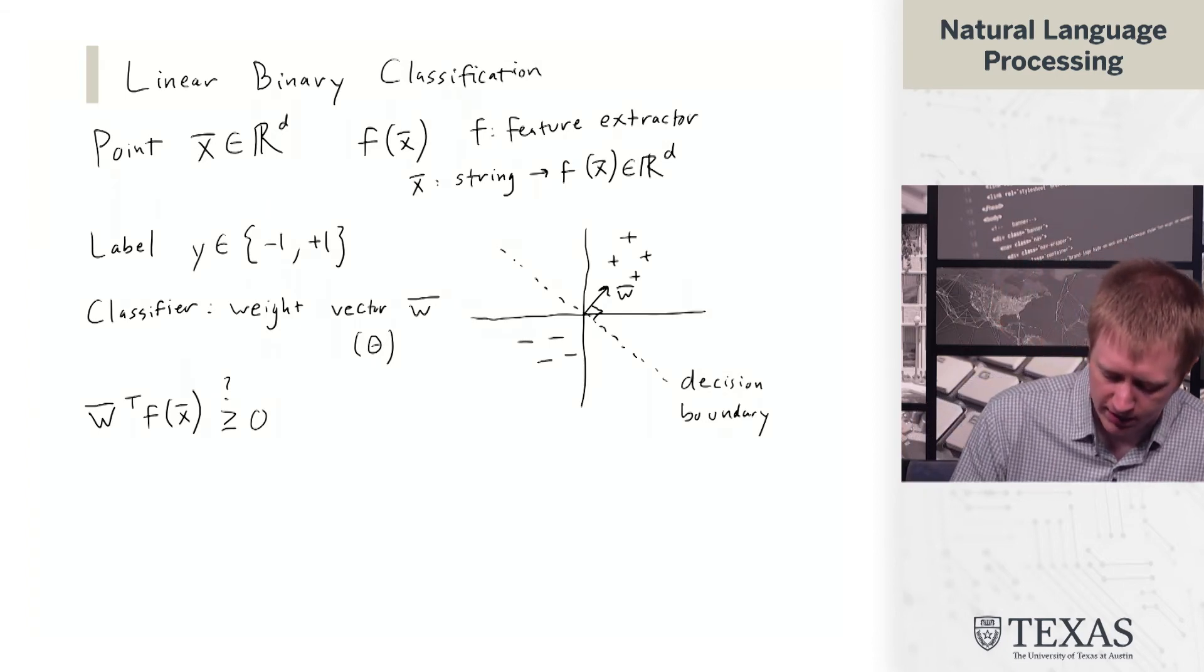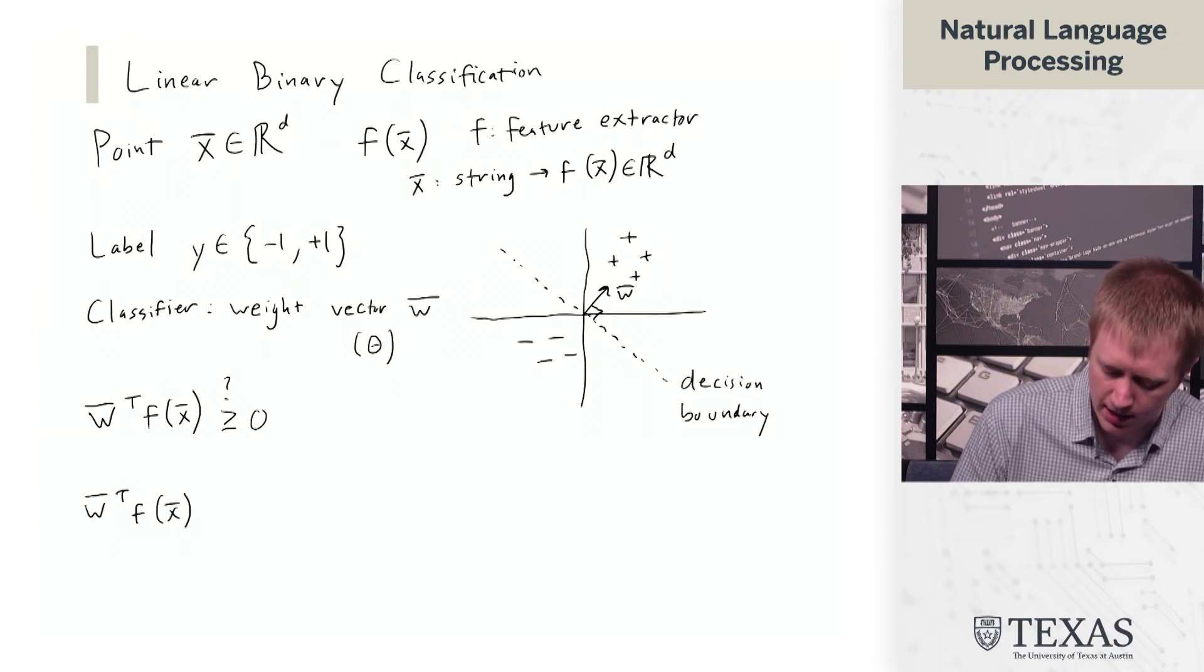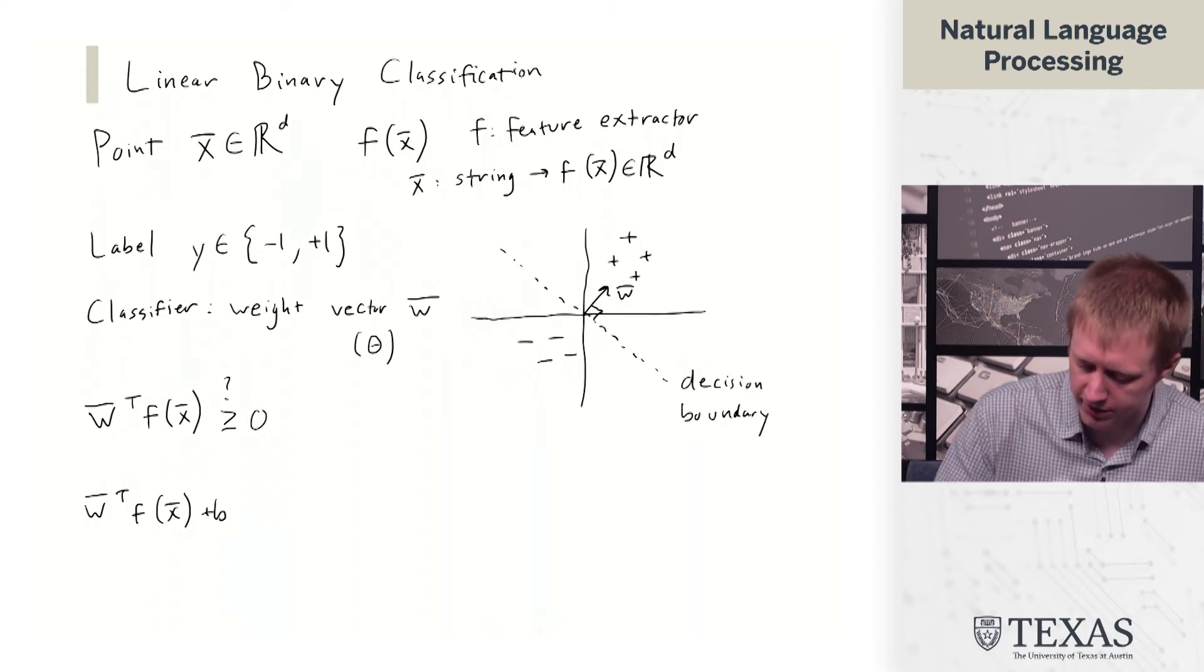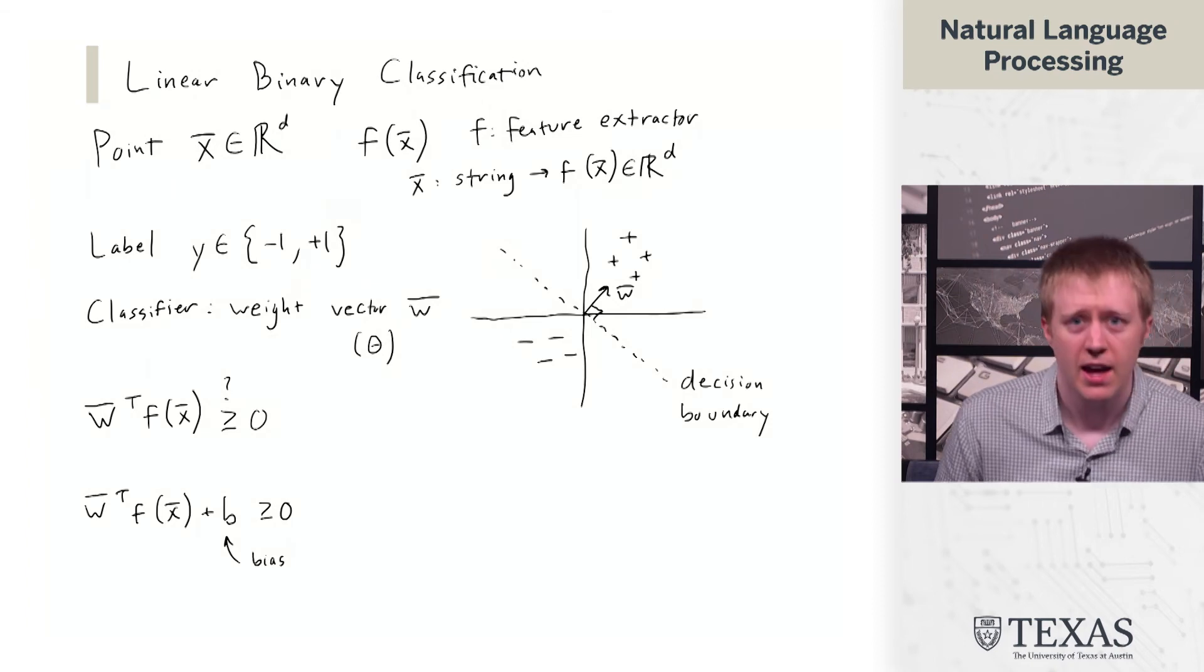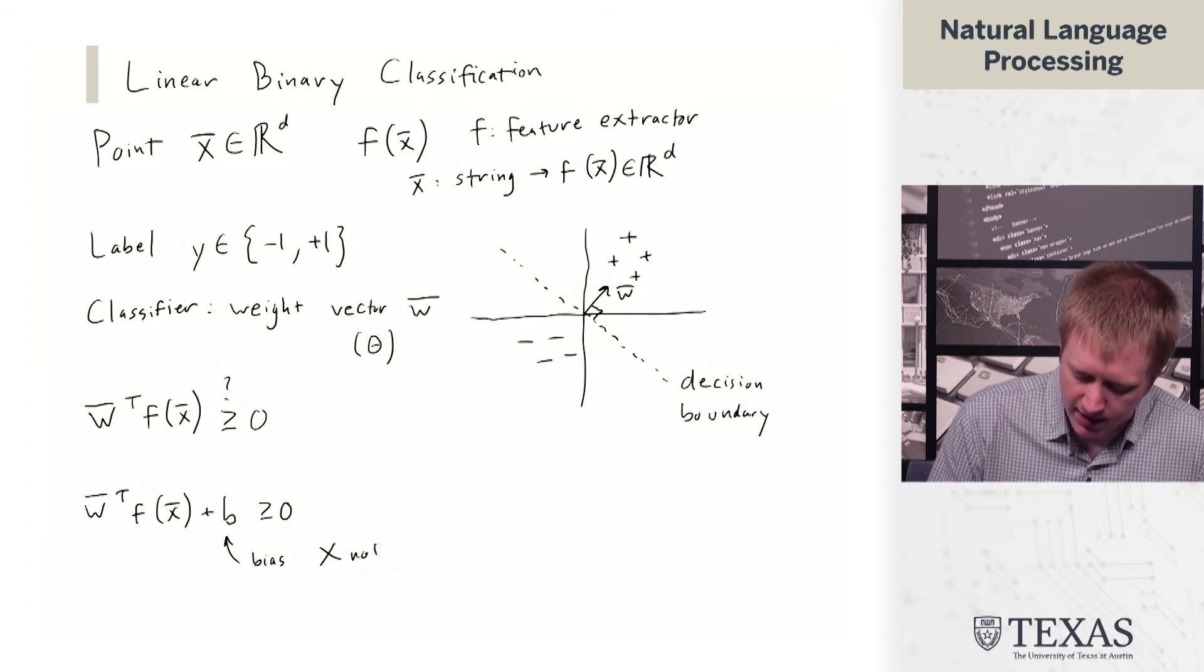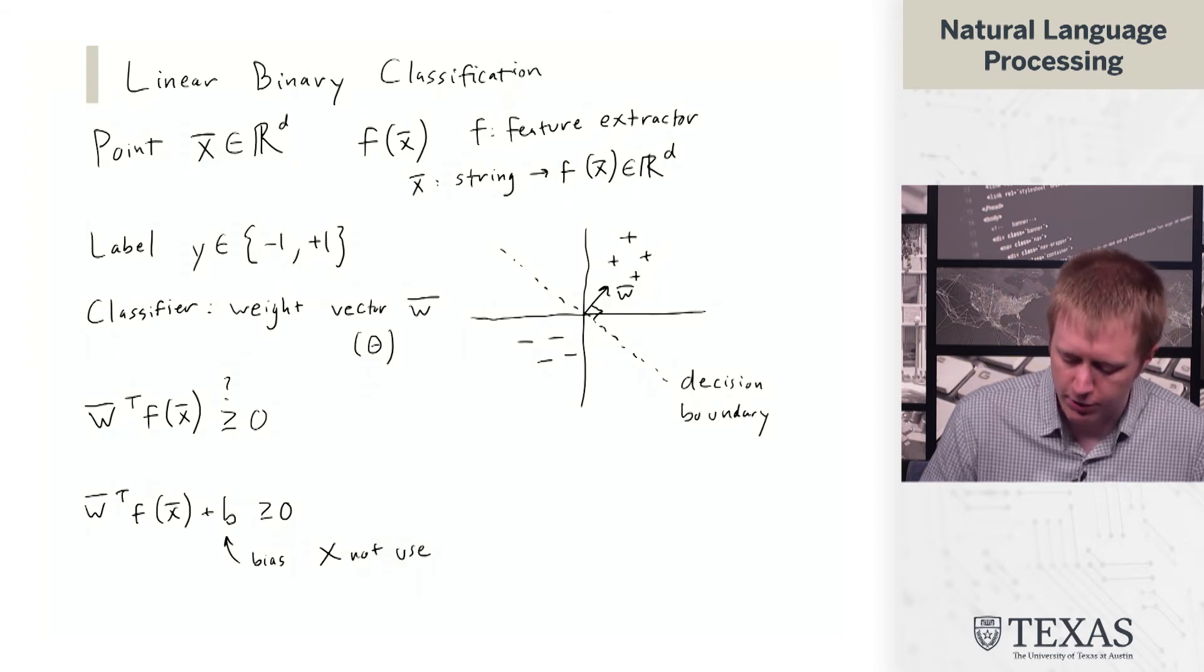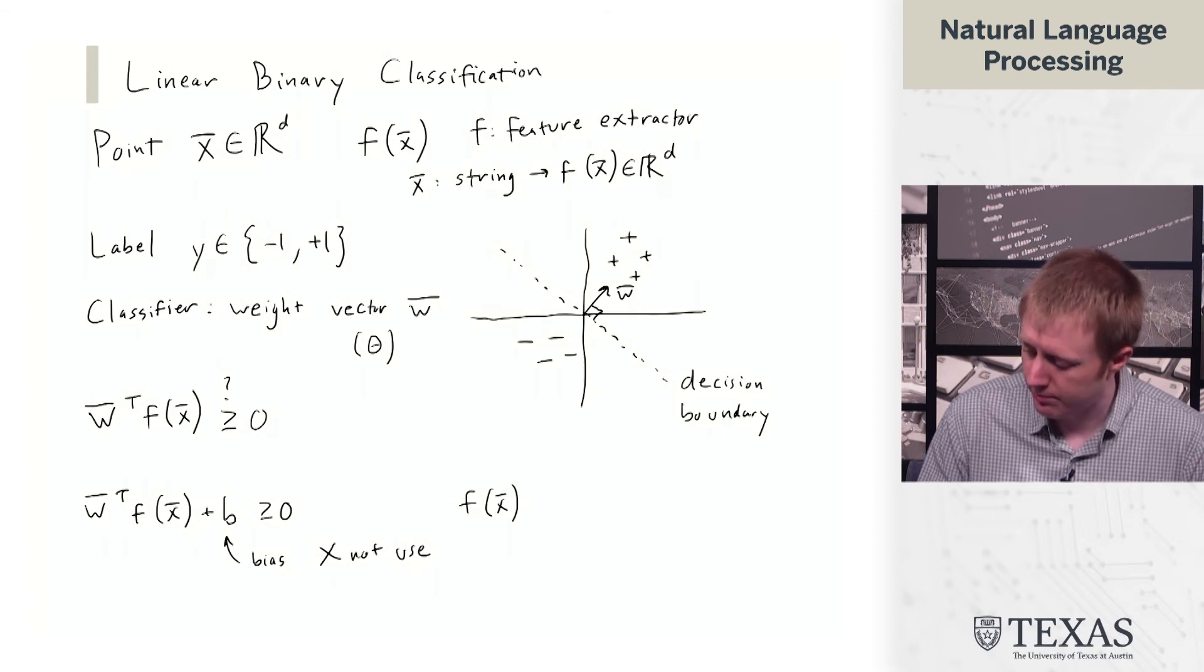One thing I will note is that we often see in other settings a bias term b. And we are going to not use that. The reason is because we can just take f of x,